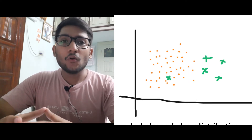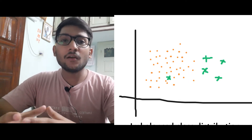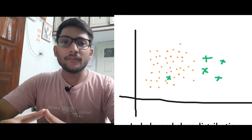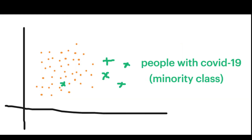Consider a scenario where you have to detect whether a person has COVID or not. You could take into account certain features or attributes of a particular person such as his temperature, his heartbeat, his oxygen level, and then build a classifier on top of it. However, if we go by statistics, the positivity rate across the world for COVID-19 is close to 5%.